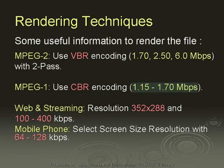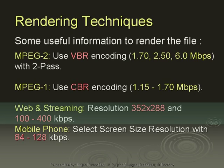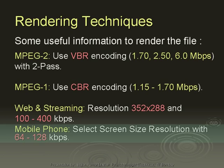Use a bit rate of 1.15 to 1.7 megabytes per second for MPEG-1. For web/band streaming, keep resolution 352×288. In Asia, we use the PAL video standard, and use a bit rate of 100 to 400 kbps. If you do not have higher bandwidth, use 100; if you have higher bandwidth, use 400 and above. For mobile phones, select the screen size resolution of the mobile phone and use 64 to 128 kilobytes per second. These are useful guidelines to render files for different purposes — they are not a strict standard; you can customize them as well.